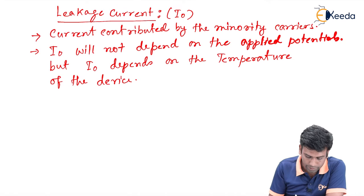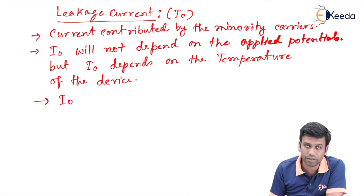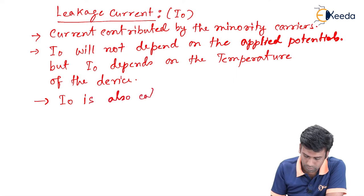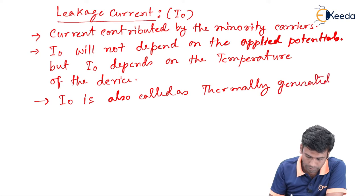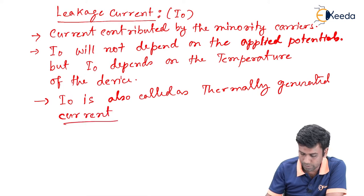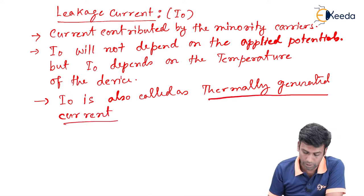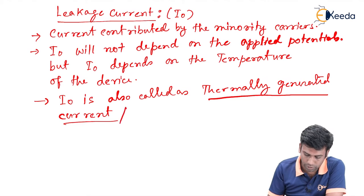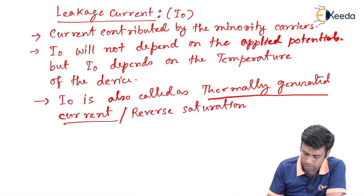But I0 depends on the temperature of the device. That's why I0 is also called as thermally generated current. Sometimes this I0 has another name. It is also called as reverse saturation current.